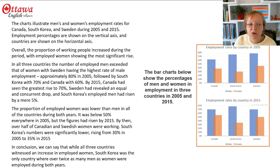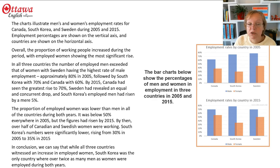Employment percentages are shown on the vertical axis and countries are shown on the horizontal axis. Overall, the proportion of working people increased during the period, with employed women showing the most significant rise.